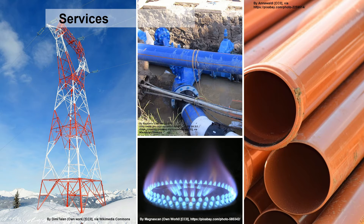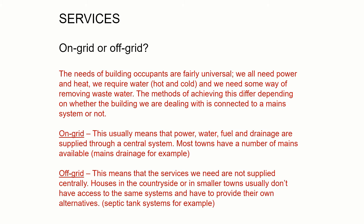We need water supply, and most of us take for granted that we can turn on the tap and get fresh clean water. When we flush the toilet it has to be taken away somewhere, so we have drainage, and we usually have some form of heating or fuel for cooking. The availability of those services depends on whether we are connected to a grid — sometimes called mains — or not. On-grid usually means power, water, fuel and drainage are supplied through a central system.